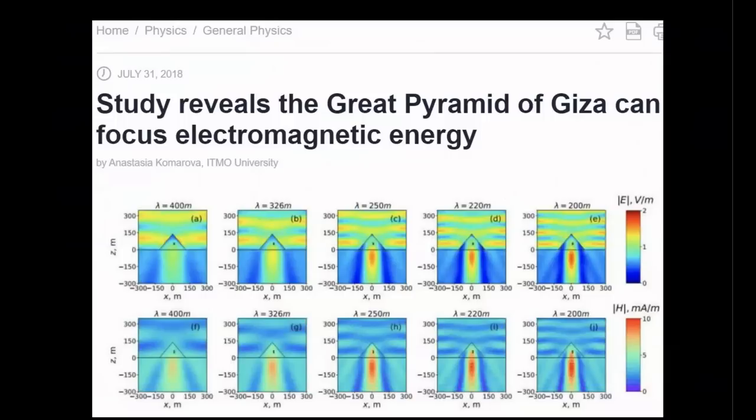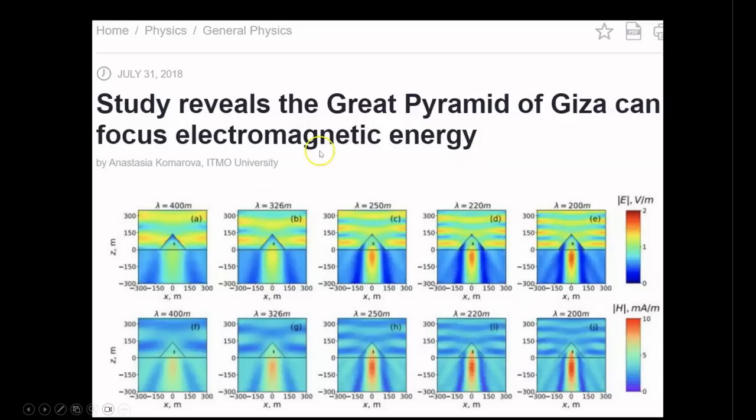Quote, study reveals the Great Pyramid of Giza can focus electromagnetic energy. And I'll be doing a follow-up episode discussing the results of this prolific research paper coming up very soon. So here on the Giza Plateau, we have the exact same methodology for attracting lightning strikes on to the Great Pyramid. With the other two pyramids being unaffected as no charges will accumulate at their apexes due to the lack of surface area.